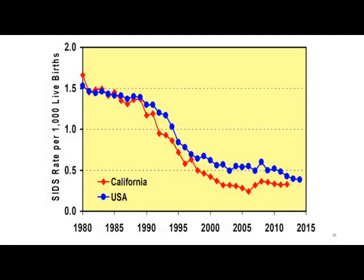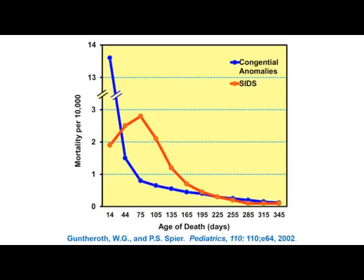This shows the SIDS rate per 1,000 live births from 1980 through about 2015, and through 2023 this rate hasn't changed much. Between 1980 and 1990, SIDS was not uncommon — about 1.5 deaths per thousand live births, meaning roughly one out of every 600 to 700 babies died from SIDS. SIDS has fallen since the safe infant sleep campaigns around 1990 to 1992, but it still remains the most common cause of death in infants in the post-neonatal period — between one month and one year of age.